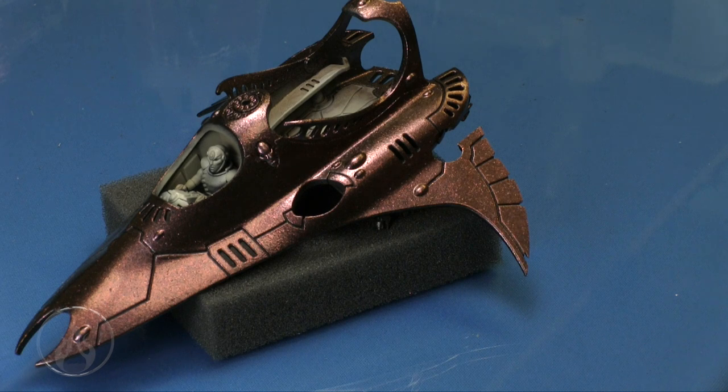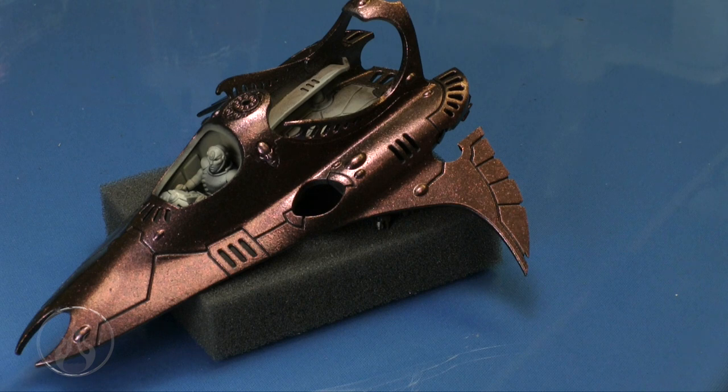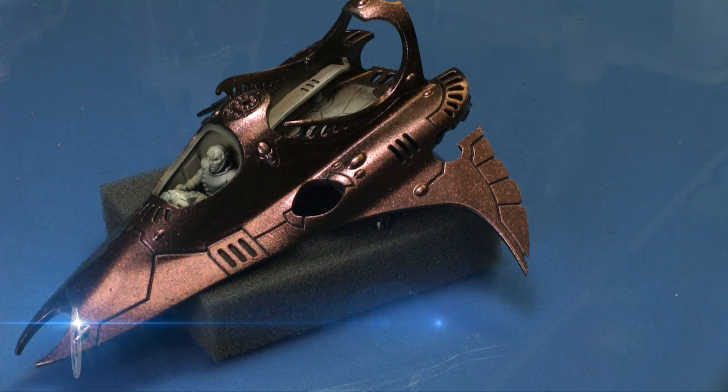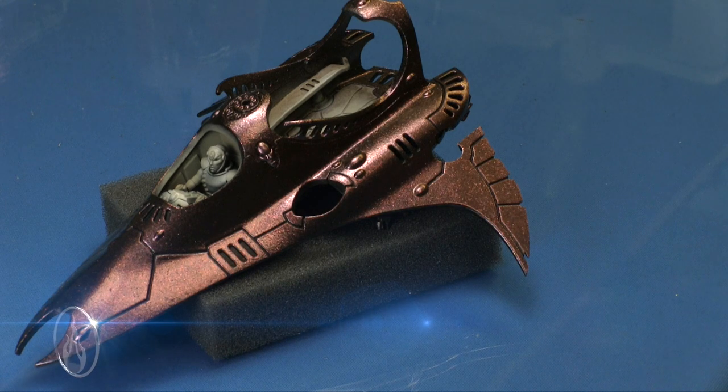Hi there, Chris here with part two in my painting the Eldar Harlequin Star Weaver using nail polish. In the previous video, I laid out the base color on this model. What I didn't show was I laid out the bone color in the cockpit and in the troop compartment area in the back.